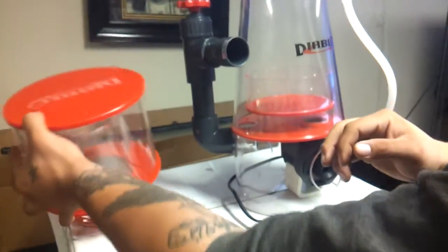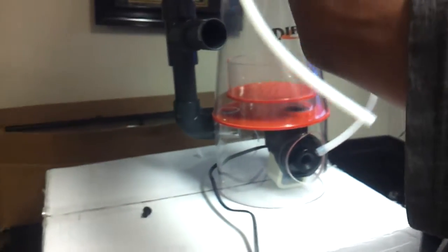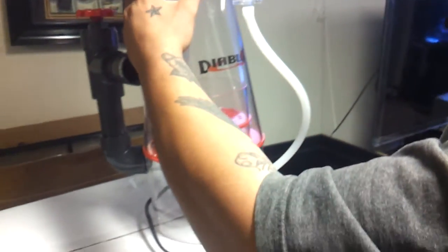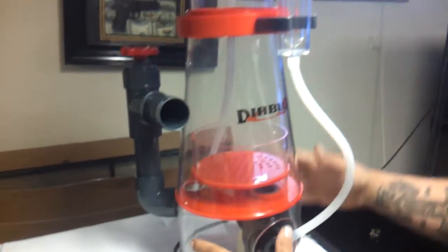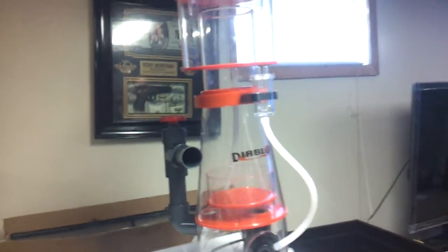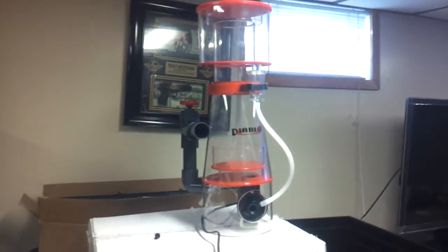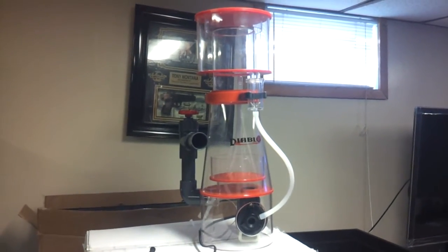And take your collection cup. Put it on top. Nice and snug on the way down. And that's what the 225 looks like once you assemble it.